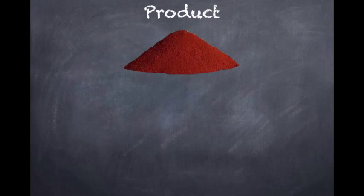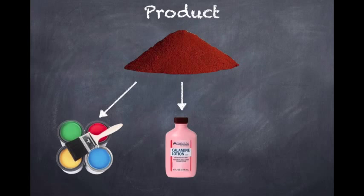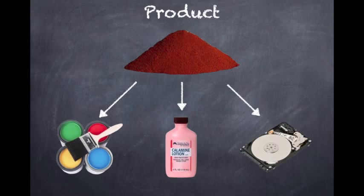The iron oxide is known as the product. Iron oxide is found as a dark red powder and is used for the coloration of paints, calamine lotion, magnetic data storage, and it can be used as a feedstock for the production of steel, iron, and metal alloys.